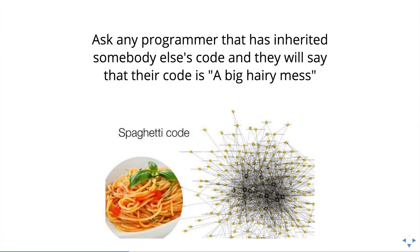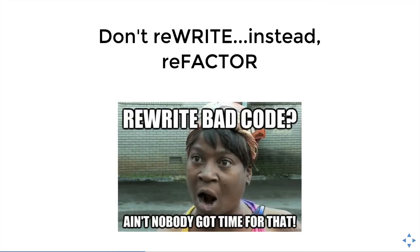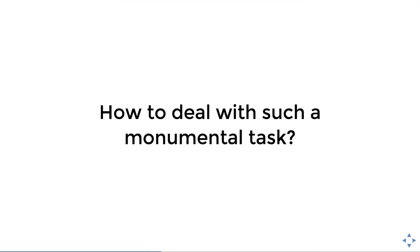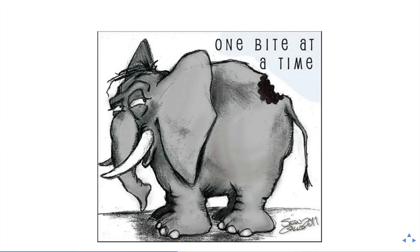It's kind of funny — if you ask any programmer that has inherited somebody else's code base, they're always going to tell you this code is a big hairy mess. You pretty much want to rewrite everything when you see these crazy monumental code bases, but you can't really do that. Unfortunately, as fun as it is, it doesn't make business sense. So instead of rewriting bad code, you have to refactor it. How do you deal with such a monumental task? As they say, one bite at a time. That's how you eat an elephant.